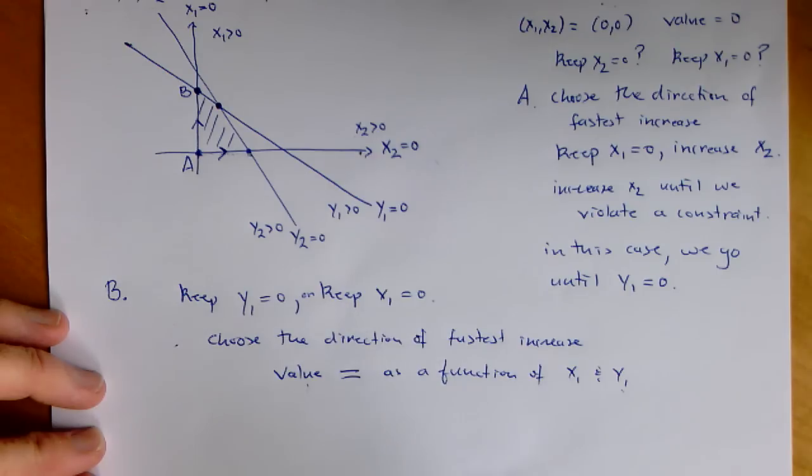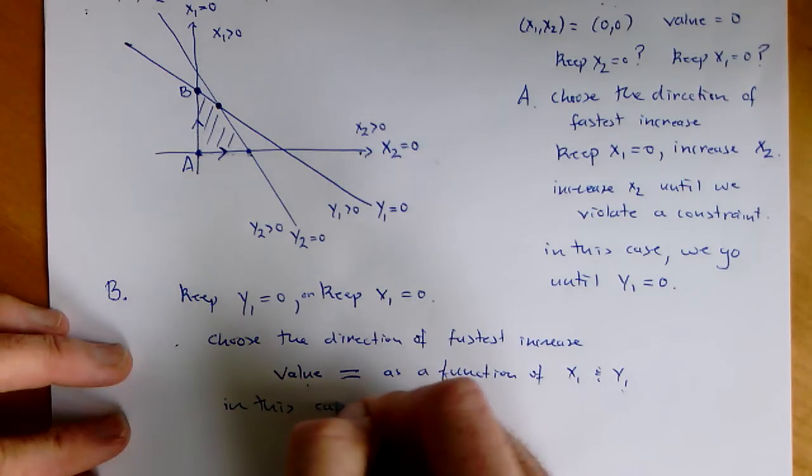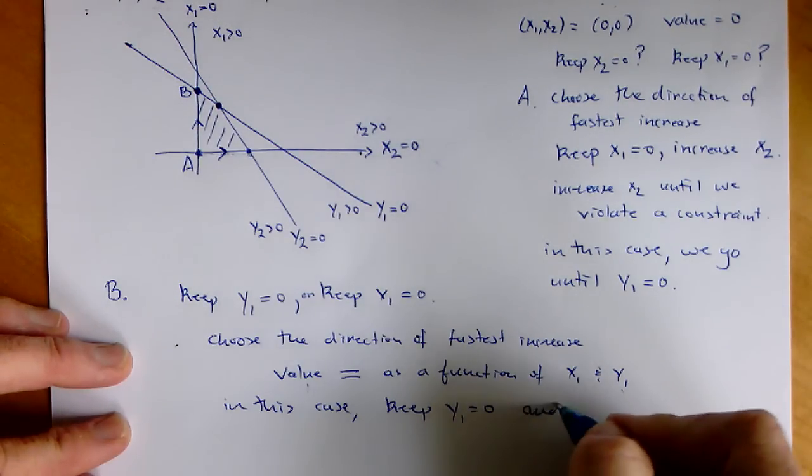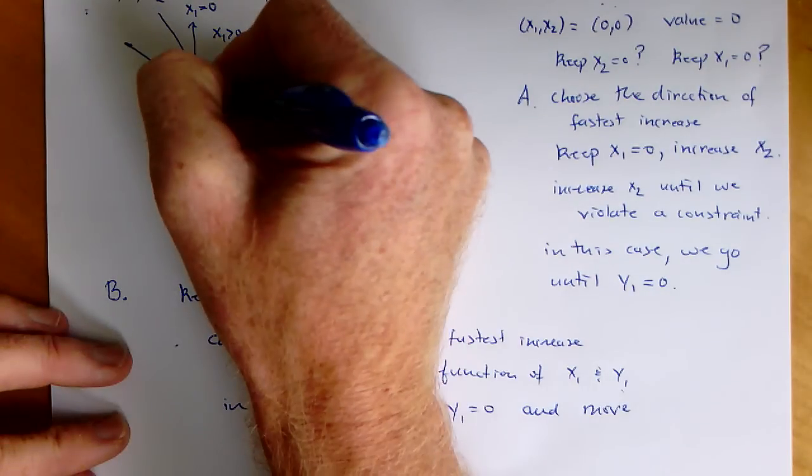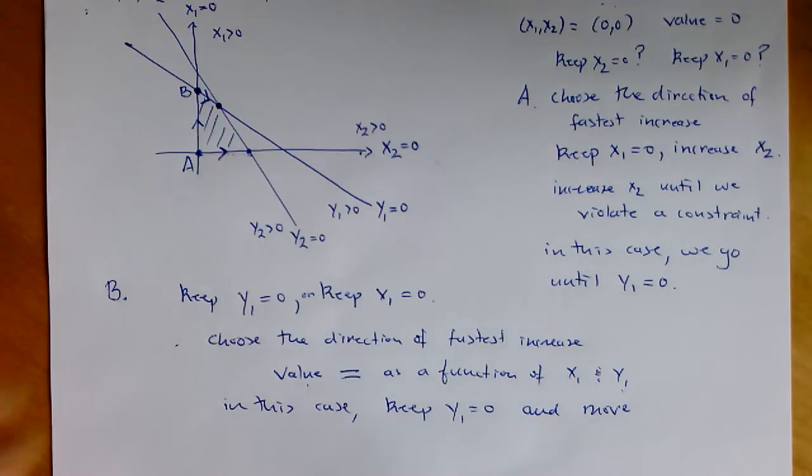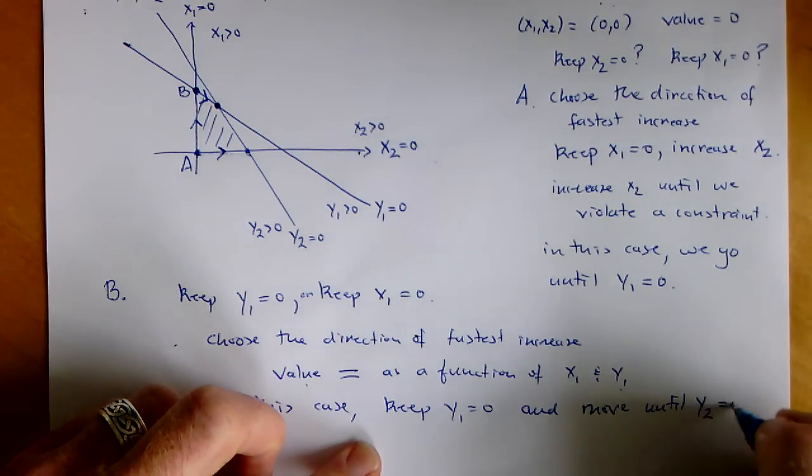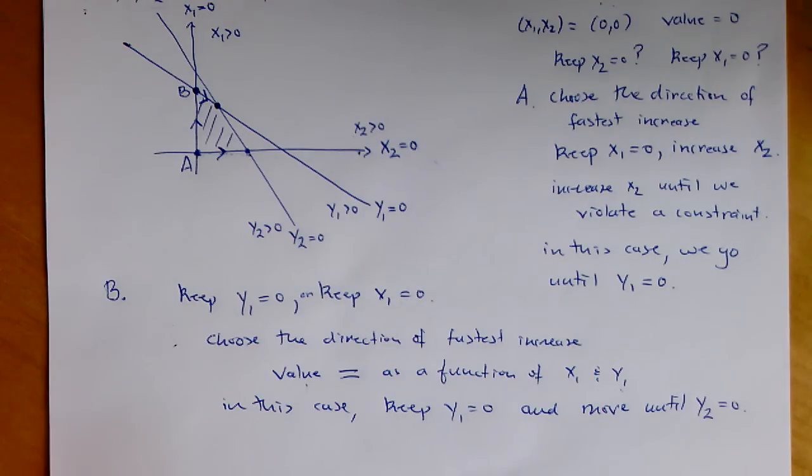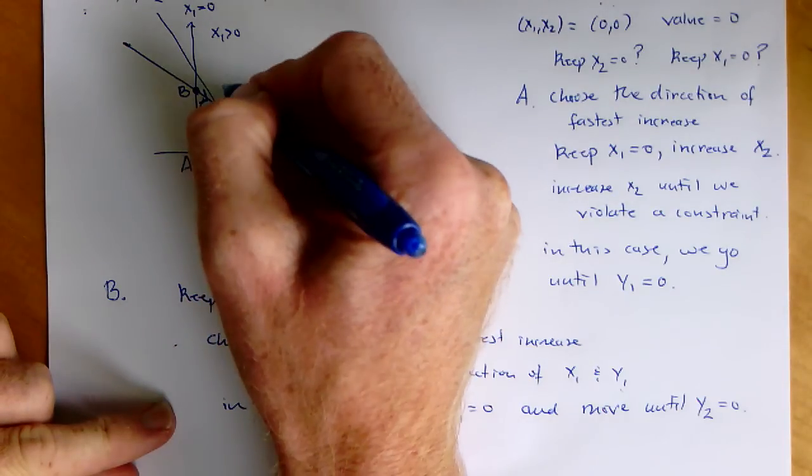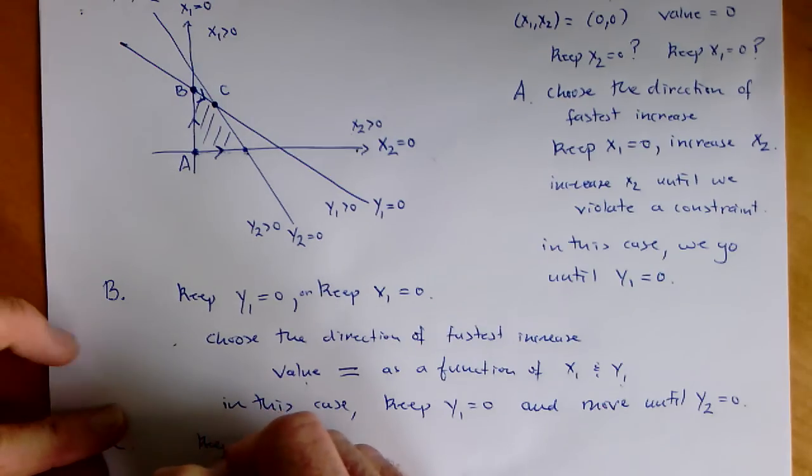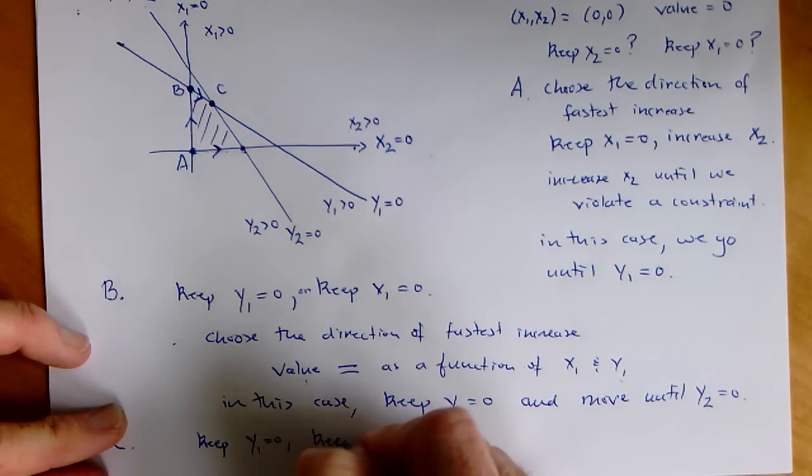We do the same thing. We figure out which direction. In this case, it's keep y1 equal to zero and move. You can see that we move in this direction. Generally, a couple of things could happen. As we move, we may start to approach an intersection point where we're about to violate a constraint. In this case, we approach the intersection point where y2 becomes zero. Again, we don't move past that point because we don't want to violate the constraint. So now we're sitting at point C.